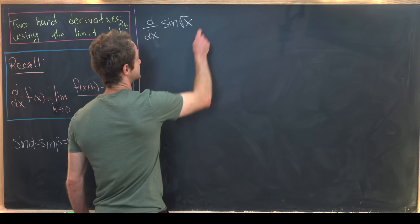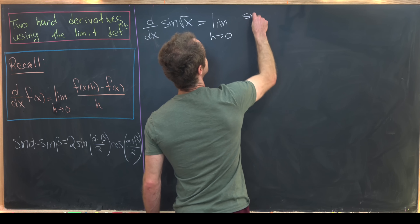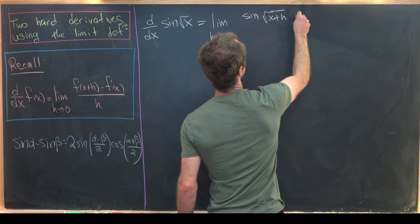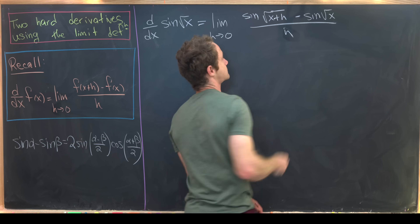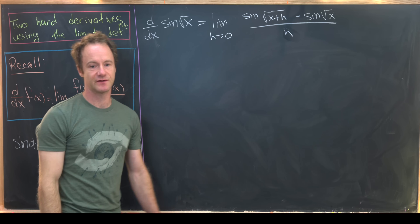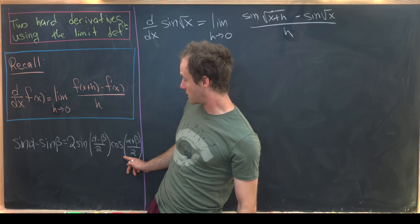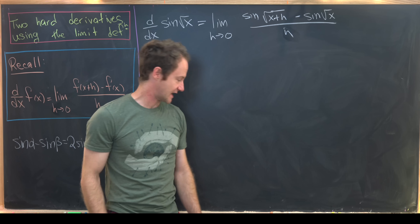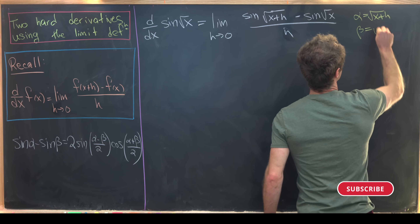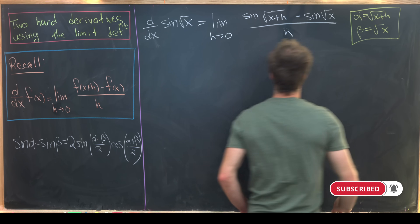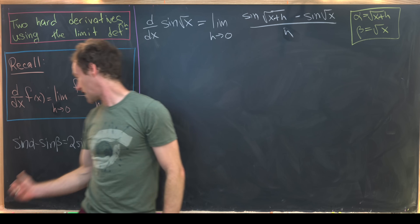So we can write this as the limit as h approaches zero of sine(√(x+h)) minus sine(√x), all over h. That's just the limit definition of the derivative. Next we apply the trig identity with α = √(x+h) and β = √x, and see what happens to the numerator.